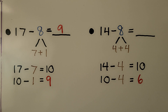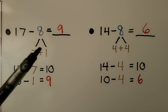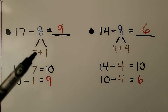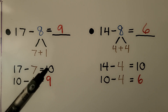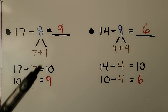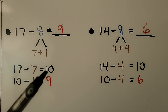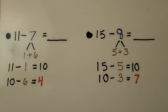So what we're doing is breaking apart the subtrahend into two numbers — like a 7 and a 1 — where the first number, when subtracted from the minuend, makes a 10, and the other number is then subtracted from that 10 we made.